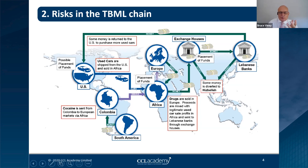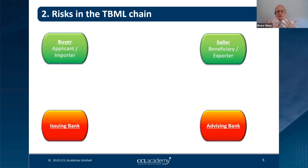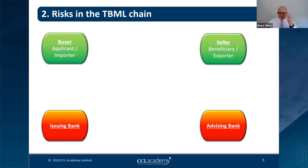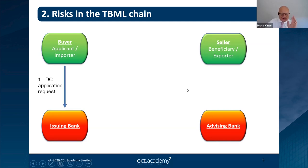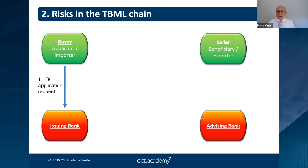In trade you have many parties to think about. In a simplified model you have a buyer of goods, a seller of goods, an issuing bank, and an advising bank. Sellers can be called beneficiaries or exporters; buyers can be applicants or importers. The buyer approaches the issuing bank wanting a letter of credit so the seller has confidence they will be paid. They apply for a documentary letter of credit.